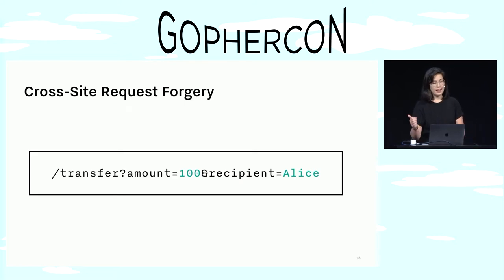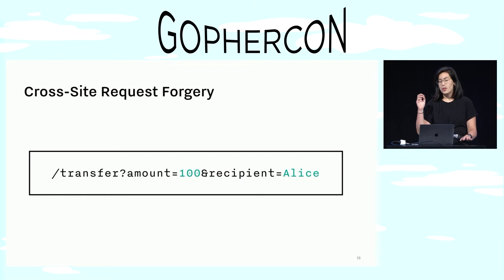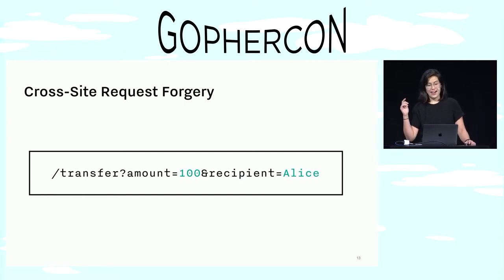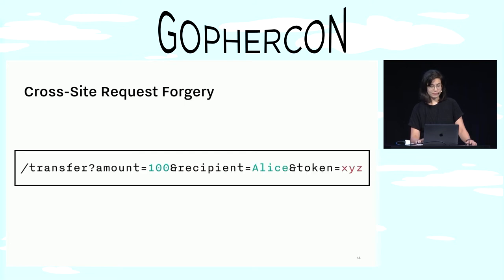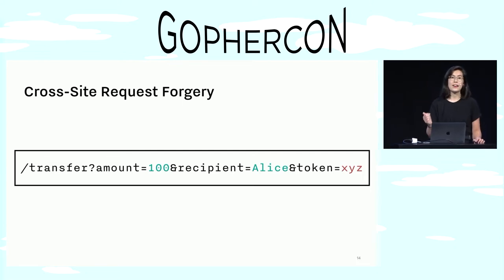So in this example, if Alice can get Bob to load this exchange URL while he's logged into the exchange somewhere else in his browser session, the browser will go ahead and send his credentials along and authorize this malicious transaction. Now as a service, the safest way to stop this is to generate a special token which is unique per session, and then require that on each request.